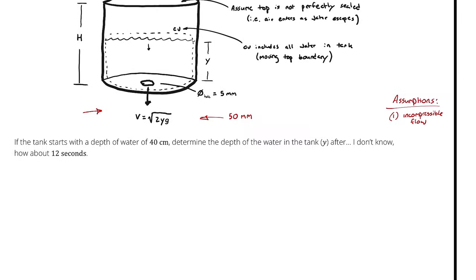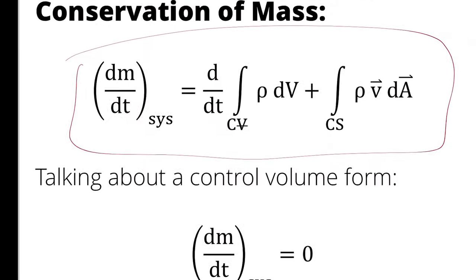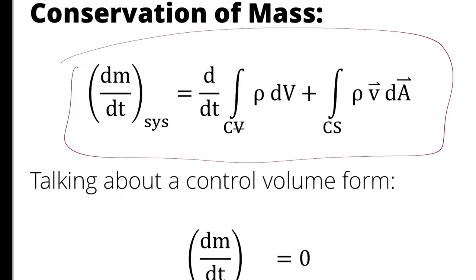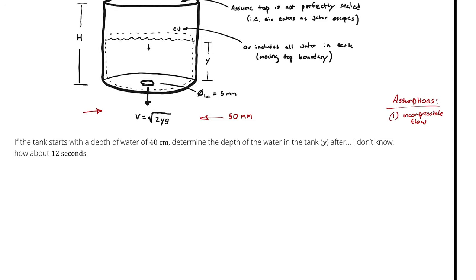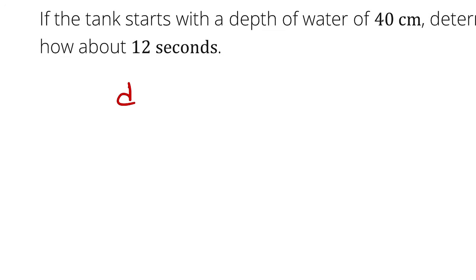I recognize that I'm going to be using the Reynolds Transport Theorem simplified for mass. That conservation of mass equation is: dm/dt of our system equals d/dt of the integral over the control volume of density with respect to volume, plus the integral across the control surface of density times velocity vector with respect to area. I will simplify dm/dt as 0 for the control volume.